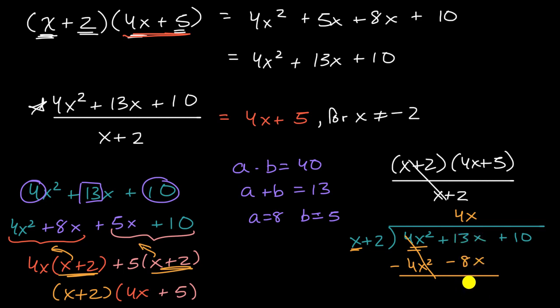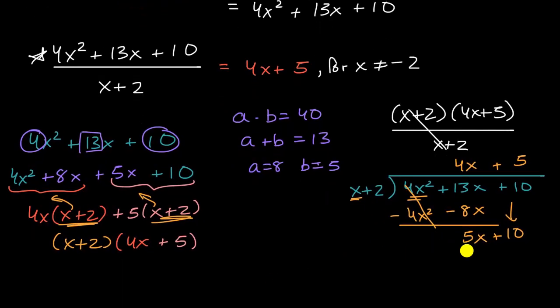13x minus 8x is 5x. Then you bring down the 10. How many times does x go into 5x? It goes 5 times. 5 times x equals 5x, and 5 times 2 equals 10. Then you subtract and you're left with no remainder. Notice when (x+2) is divided into this, you get 4x+5, just what we saw earlier. We'll explore these multiple techniques, including polynomial division, and see what happens when you have a remainder.